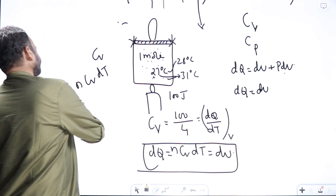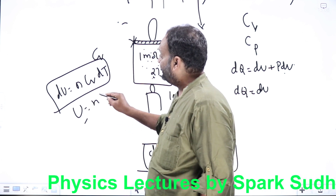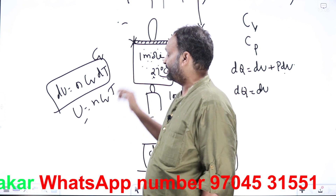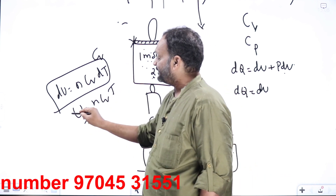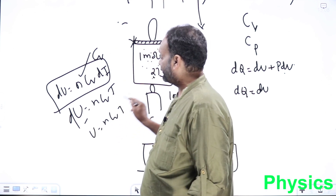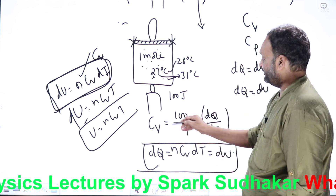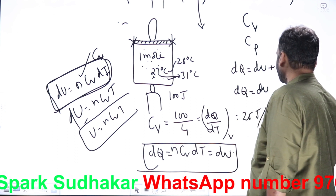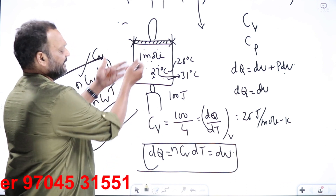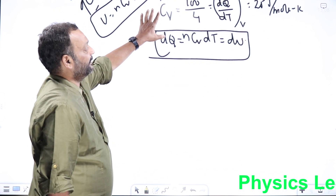In our example, CV equals 100 divided by 4, which is 25 joule per mole kelvin. The units for molar specific heat are joule per mole kelvin. Keep the formulas U equals n CV T and dU equals n CV dT in mind — they are very useful in solving problems.